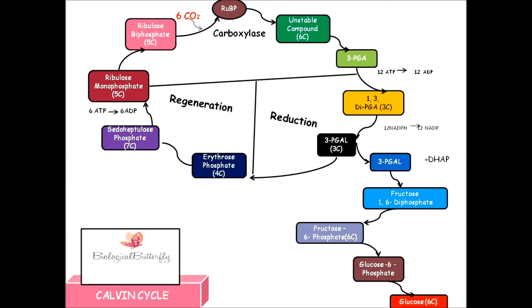...and there is generation of ribulose 5-phosphate again, so that it can get mixed up with environmental carbon dioxide and with RUBP carboxylase. It can undergo the whole cycle again and form glucose, keeping on generating glucose.